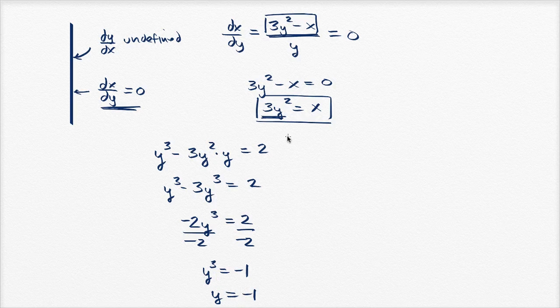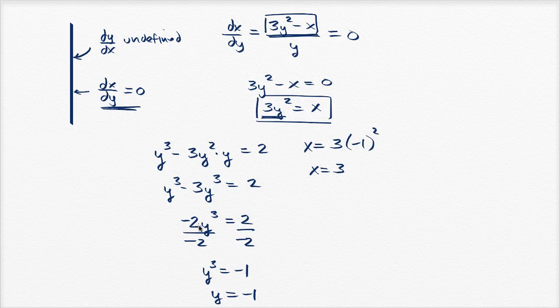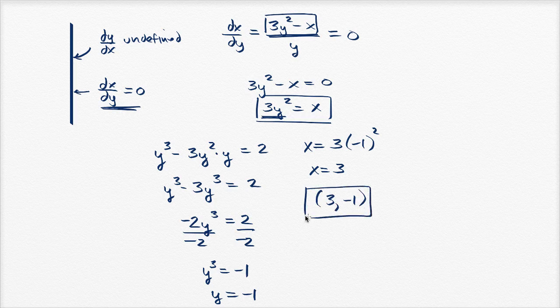Now if y is -1, what is x? Well, x is going to equal 3 times (-1)². So (-1)² is just 1, so x equals 3. So the point on that curve at which the tangent line is vertical is the point (3, -1). And we are all done.